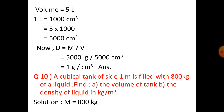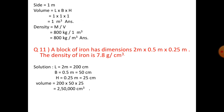Question 10: a cubical tank of side 1 meter is filled with 800 kg of liquid. Find the volume of the tank and the density of the liquid in kg per meter cube. Mass is 800 kg and side is 1 meter. As it is a cubical tank, volume equals 1 into 1 into 1, that is length into breadth into height, equals 1 meter cube. Density equals m divided by v, which equals 800 kg per meter cube.